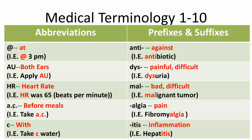Lowercase a dot c dot (a.c.) means before meals — for example, 'take before meals.' A lowercase c with a bar above it means 'with' — for example, 'take with water.'